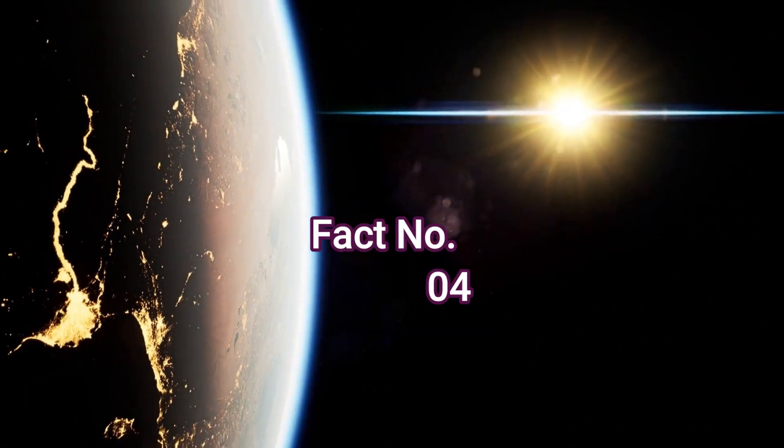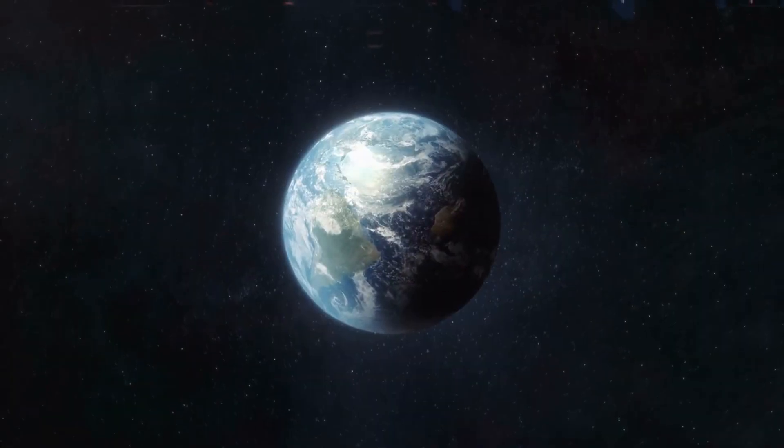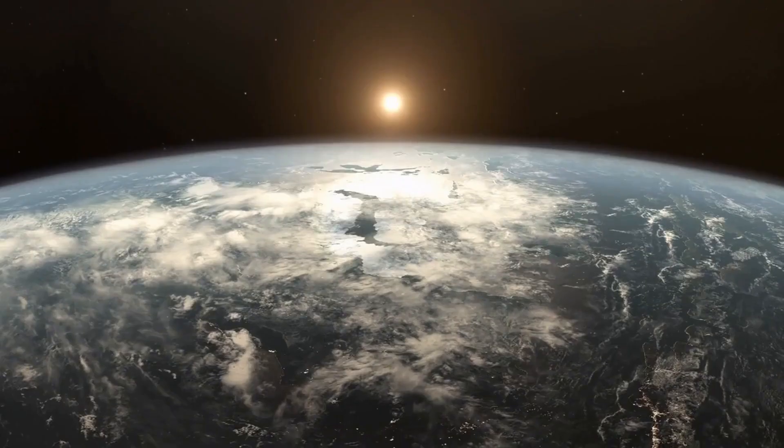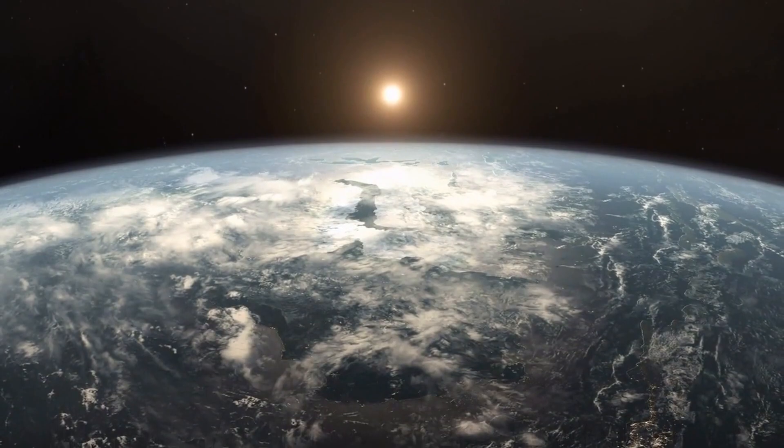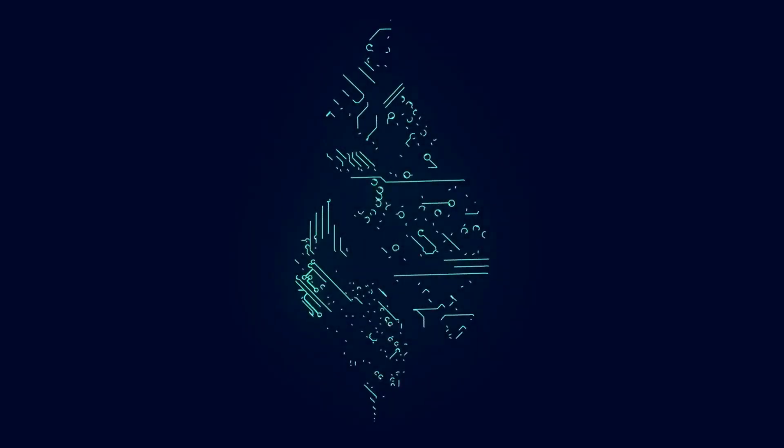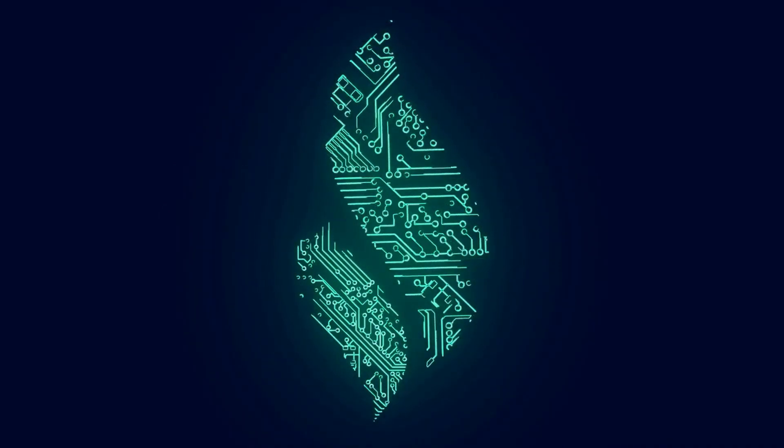Fact number four, the sun is over 4.6 billion years old. The sun is an incredibly old star, and it's been around for over 4.6 billion years. That's older than the Earth, which is only around 4.5 billion years old. The sun is expected to continue shining for another 5 billion years, after which it will eventually run out of fuel and die.